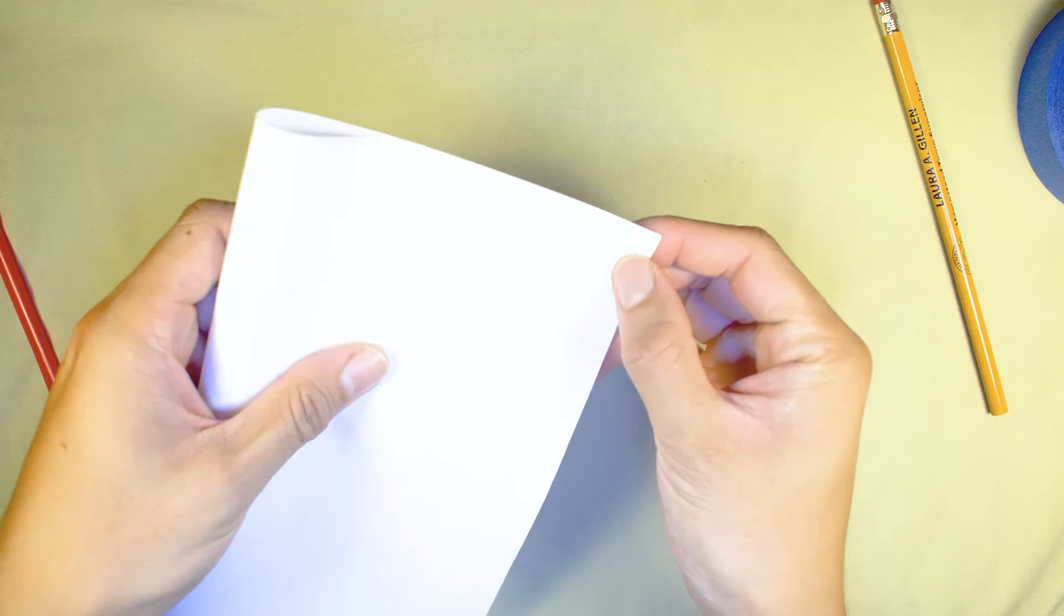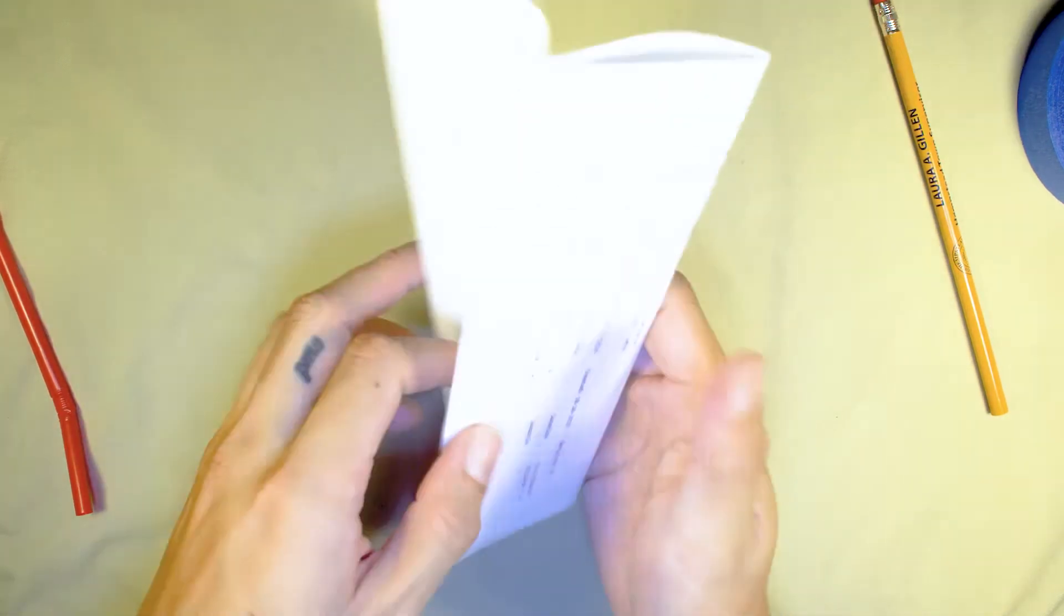First, fold paper into fours. Then, cut a fourth piece off.